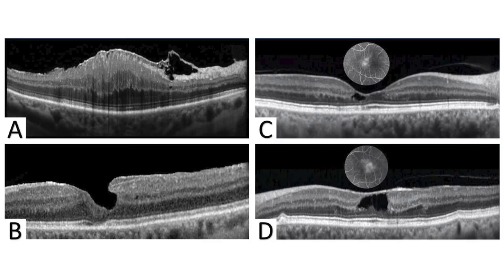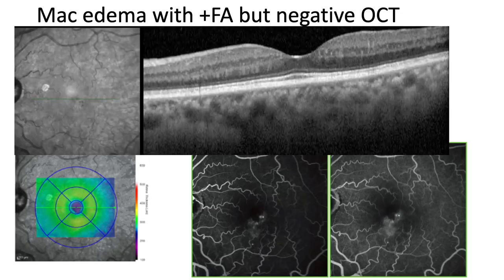Panel A shows an epiretinal membrane with significant thickening and macular edema. Panel B shows epiretinal proliferation, which has alternating medium and bright reflectivity and medium reflectivity within the retina. This has different prognosis with worse outcomes on peeling, and it is distinct from typical ERM. Panels C and D show MacTel — we see cavitations and a foveal depression, but that does not mean there is no macular edema, as leakage is visible on fluorescein angiography in both eyes of the same patient.